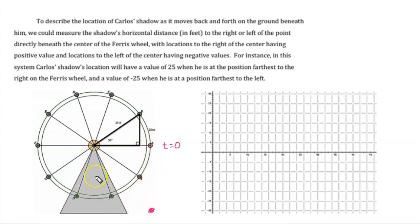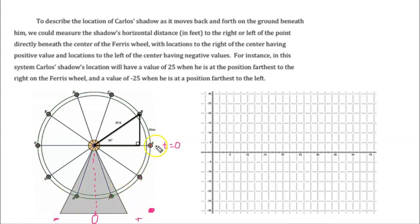At this point, measuring from the axis of the Ferris wheel — the axle — the value is zero. We said to the right is positive and to the left is negative. So at T equals zero, his shadow falls right there, which is the radius away. That should be 25, so at T=0 he is 25 feet to the right of the middle.